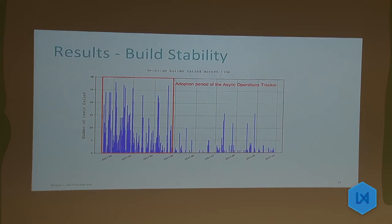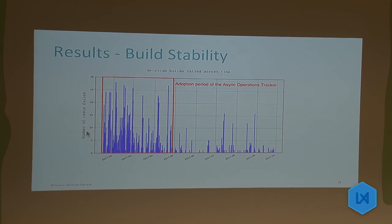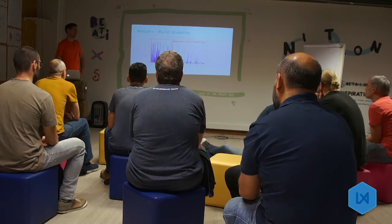Now, some results. Right here is the period where we were doing the hardening phase, really focused on improving build stability. This chart shows the number of tests failed — these blue bars are the builds that failed. We had a lot more tests failing in the builds earlier. Some of those were regressions, but it's not that we introduced more regressions in that period.